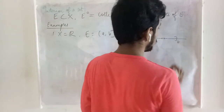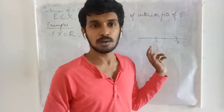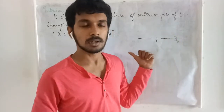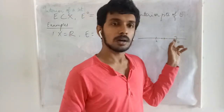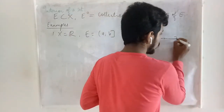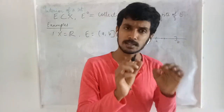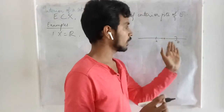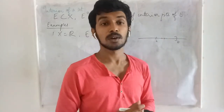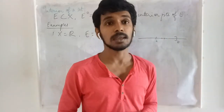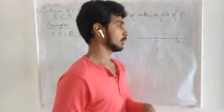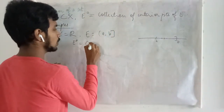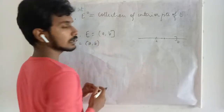Now let me consider the endpoint B, which is included in the set. If I try to find the smallest possible neighborhood of B, that neighborhood will also contain at least one point beyond B. This means B cannot be an interior point. Therefore, the interior of this half-open interval is the open interval (A, B).